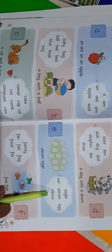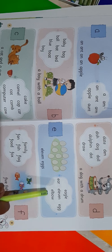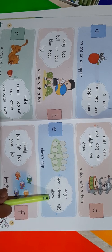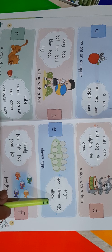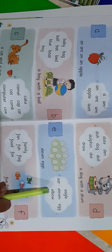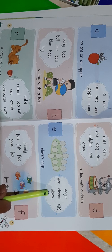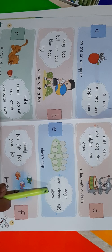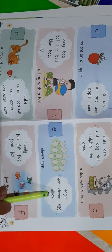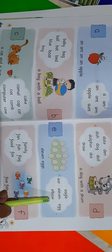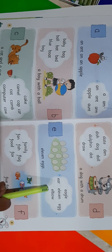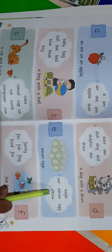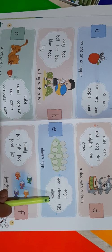Now come to the next word. It's E-L-B-O-W, elbow. E-L-B-O-W, elbow. Repeat once again: E-L-B-O-W, elbow. Repeat once again: E-L-B-O-W, elbow.